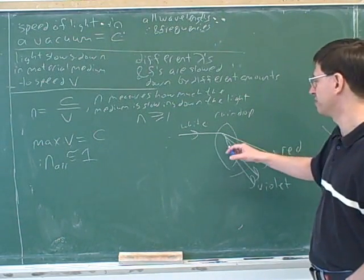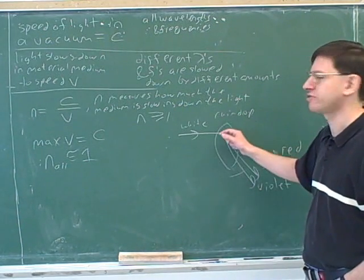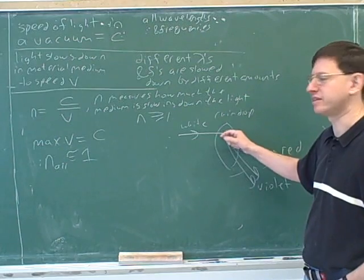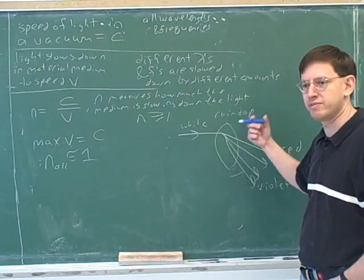All right, this is totally highly simplified. Rainbows are actually a little bit complicated. But this gives the basic idea that the rainbow is coming from the fact that the raindrops are bending the light, refracting the light, but different wavelengths get bent by different amounts.